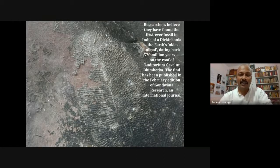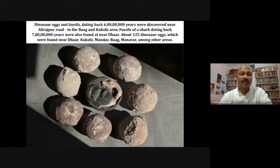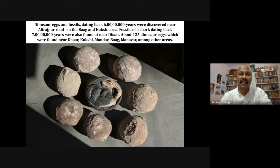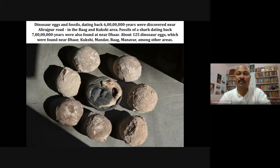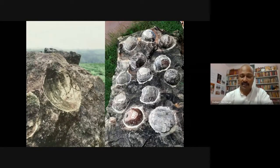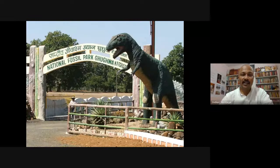We can start our prehistory from here. Dinosaur egg fossils dating back six billion years were discovered near Alirajpur road in the Bhag and Kukshi area. Fossils of a shark dating back seven billion years were also found near Dhar. These all places are in Madhya Pradesh. About 125 dinosaur eggs were found near Dhar, Kukshi, Mando, Bag, Manwar and other areas. The National Fossil Park of Gurgwa is most famous, and a new dinosaur park is being established in Gujarat — the world's third largest park.